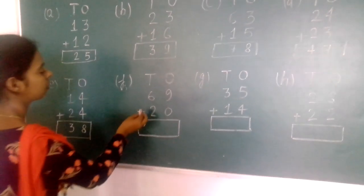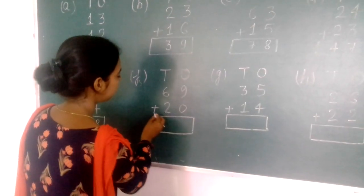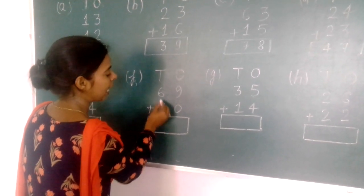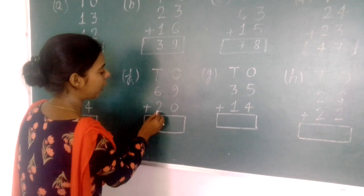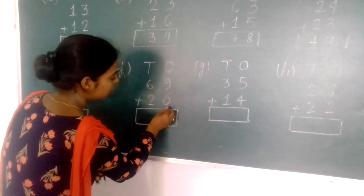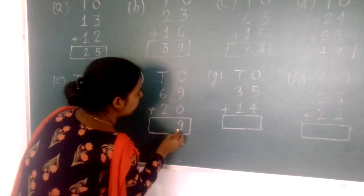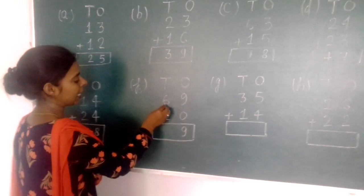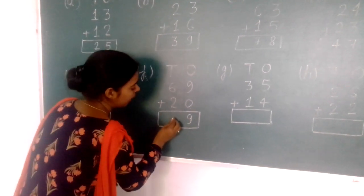Next: six tens, nine ones (69) plus two tens, zero ones (20). Nine plus zero equals nine. Six tens plus two tens equals eight tens.